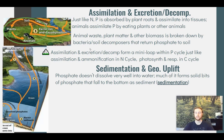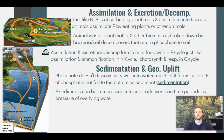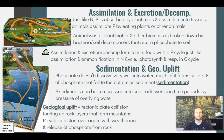Over time, the weight of water above those phosphate-containing sediments compresses them into sedimentary rock like limestone or sandstone. Geological uplift is then the process where tectonic plates collide and force new rock layers up to form mountains. This exposes new rock to wind and rain, which starts the weathering of phosphorus again, bringing us back to the beginning of the cycle.